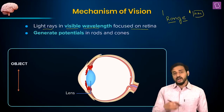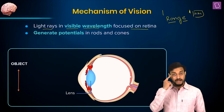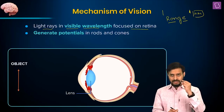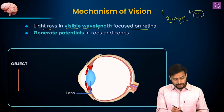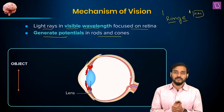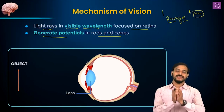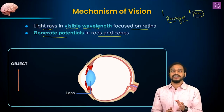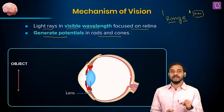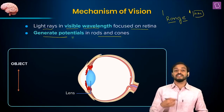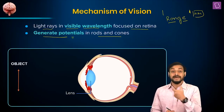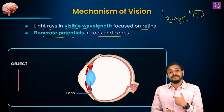A quite similar mechanism takes place in our eye as well. When the visible wavelength of light falls on the retina, it is able to generate potentials in the rods and cones. That is why we studied this before starting on eyes and ears — the same mechanism is working here. The potential generated is the signal for the brain, which interprets it and gives us a perception.